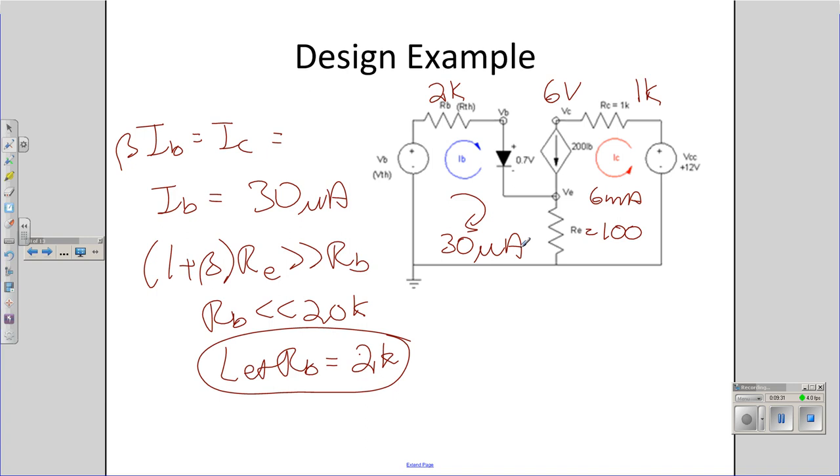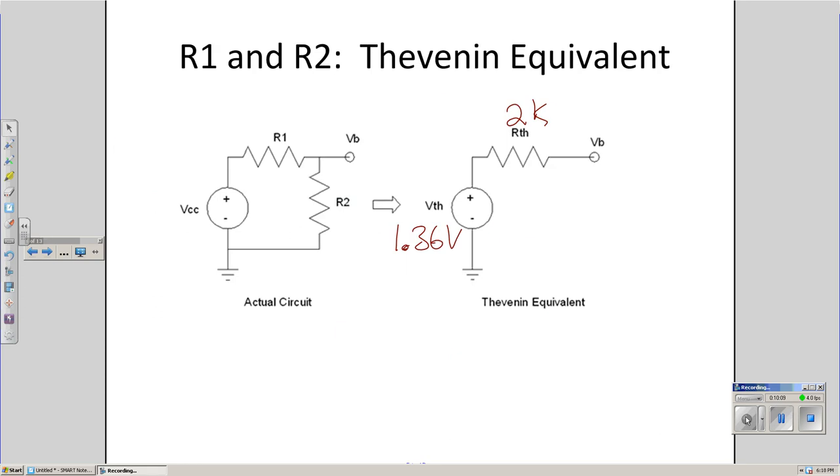I now know everything in the loop except for VB, so I can solve for VB. Here's the VB is the voltage drop across the 2K resistor RB. It is 2K times IB, times 30 microamps, plus 0.7. I know we're looking at 0.7 there. What's the voltage drop across RE? 1 plus beta IB gives you VB. When you're done, you wind up with VB of V Thevenin as 1.36 volts. R Thevenin is 2K.